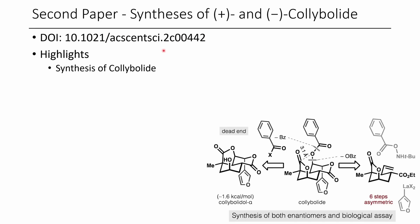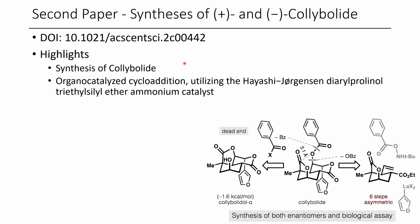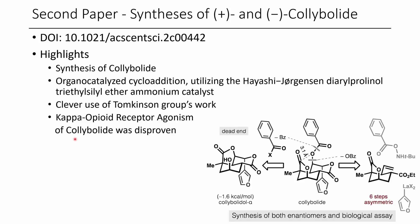In the second paper, we're talking about the synthesis of colibolide. They synthesize colibolide using an organocatalyzed cycloaddition reaction, using the Hayashi-Jorgensen diarylprolinol triethylsilyl ether catalyst. They also use the work of the Thomson-Kins group. Finally, they demonstrate that the kappa opioid receptor agonism previously thought to occur from colibolide is actually not the case — it's now disproven that they've made this compound.